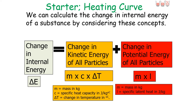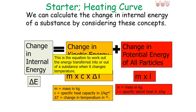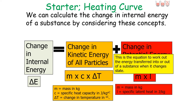The equation to calculate the change in kinetic energy of all the particles is E equals m times c times delta T, where delta T is the change in temperature, c is the specific heat capacity in joules per kilogram degree Celsius, and m is the mass in kilograms. The change in potential energy is calculated by E equals m times L, where L is the specific latent heat in joules per kilogram. The left equation is used for temperature changes on the diagonal line, and the right equation for state changes on the flat line of the heating or cooling curve.